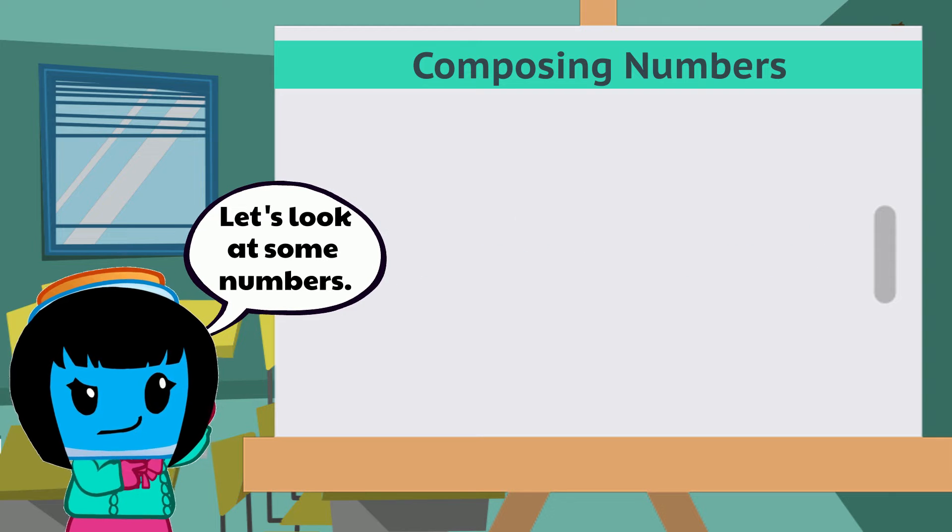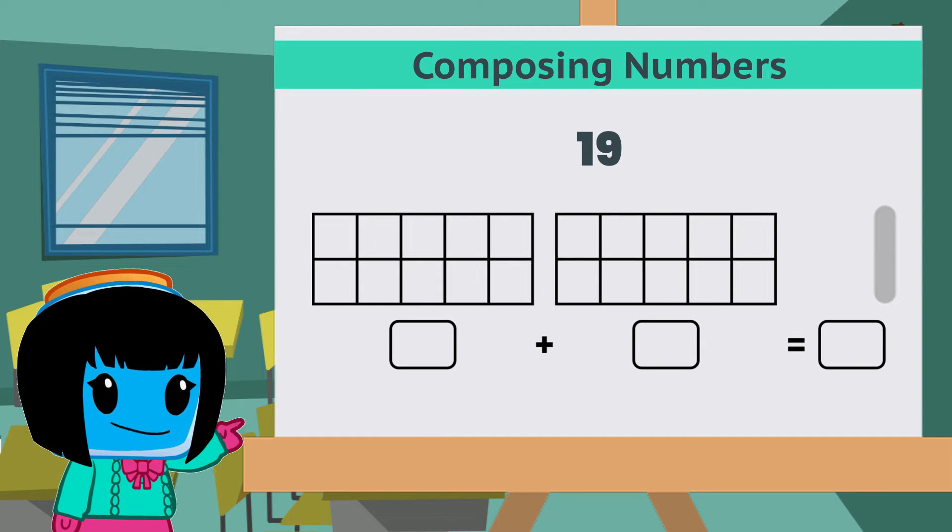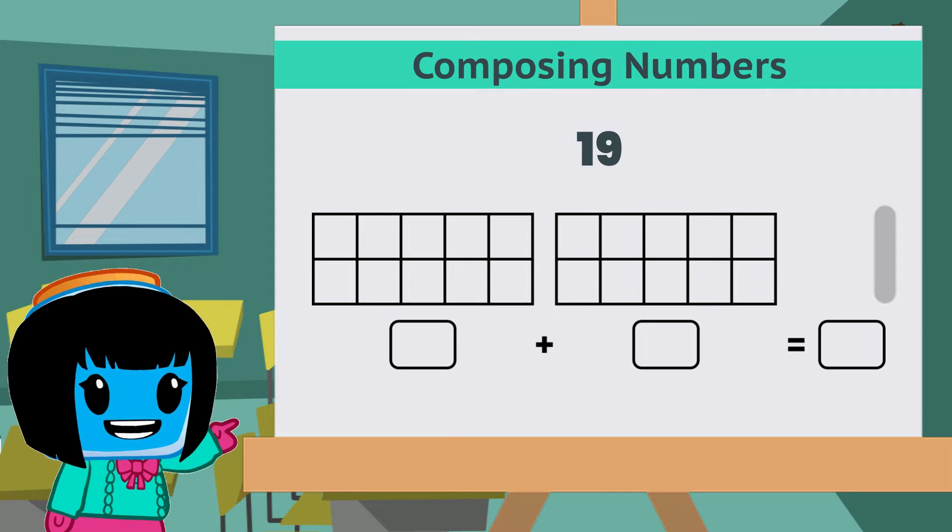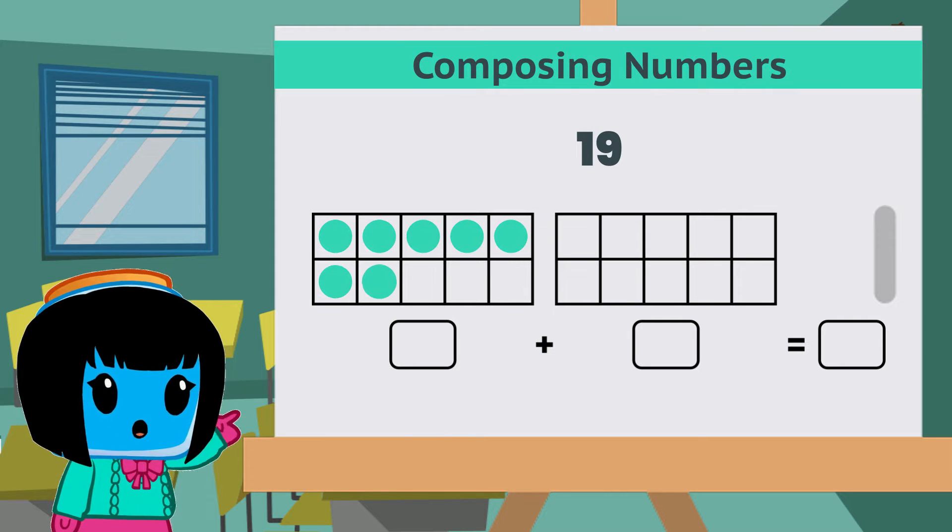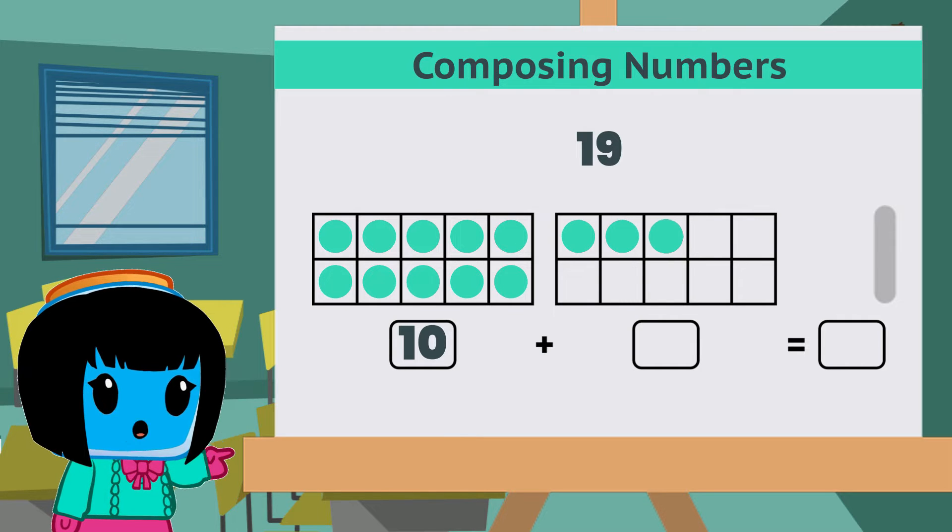Let's look at a couple numbers. We need to compose the number 19. Let's start by filling out the 10 frames. We filled out one 10 frame. Let's continue filling out the other one by placing 9 more dots.